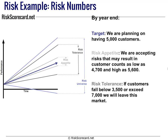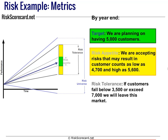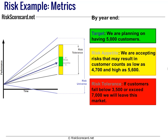As a performance framework, we describe performance within the target area as green. The risk appetite area is yellow — we can survive, but we need to exhibit some caution. And then the risk tolerance range is where we need to be paying special attention. Those are the red, yellow, and greens you'd see in a typical scorecard.